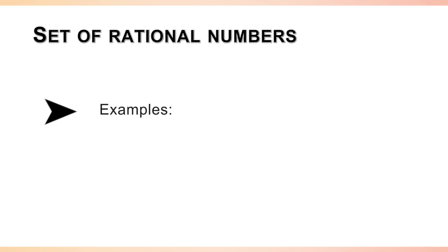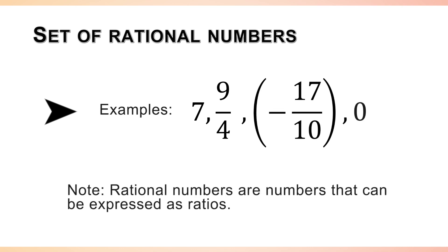Examples of rational numbers are 7, 9 over 4, negative 17 over 10, and 0. Note that rational numbers are numbers that can be expressed as ratios.